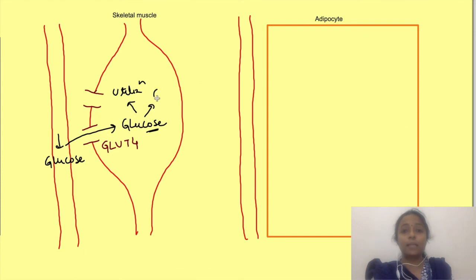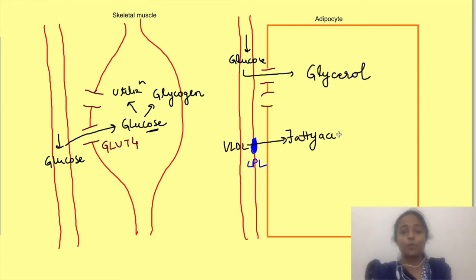Now in the skeletal muscles, excess glucose is also stored as glycogen while in adipose tissue the glucose which enters acts as a substrate for glycerol portion of triacylglycerol. We have already seen that fatty acids from VLDL enter the adipose tissue. So the glycerol from glucose and fatty acids combine to form triacylglycerol in adipose tissue. This is how excess glucose is stored as triacylglycerol.